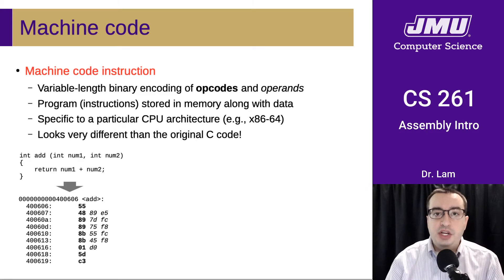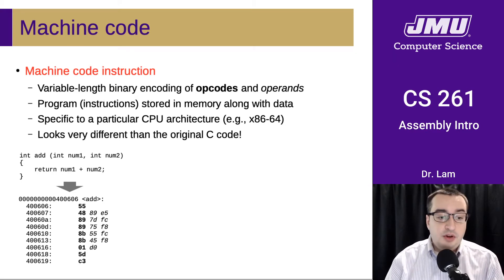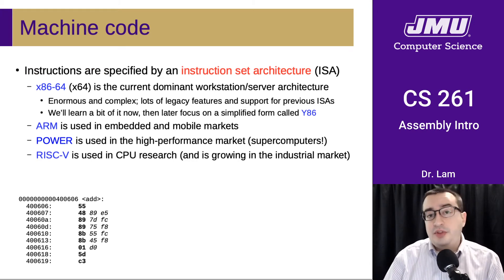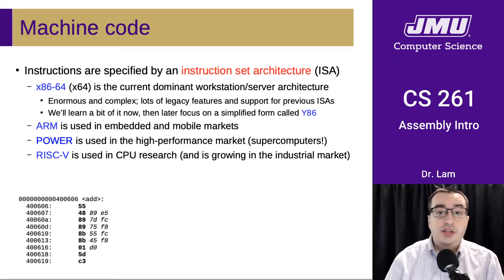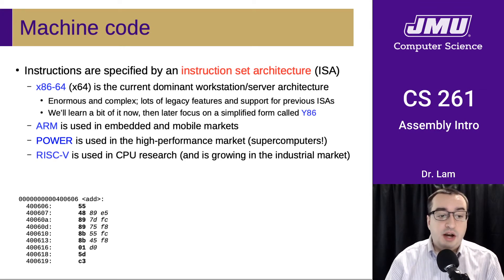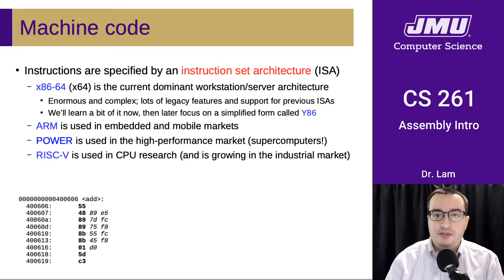Machine code is usually specific to a particular CPU architecture, so machine code written for one kind of CPU generally will not work on another. As you can see, the machine code looks very different from the original C code — here's some C code for an add function, and here are the actual bytes of machine code it turns into. The instructions are specified by an instruction set architecture. The dominant ISA right now is x86-64, which is dominant in the workstation and server markets but is enormous and complex. So we're going to learn a little bit of it and focus on a simplified form called y86.